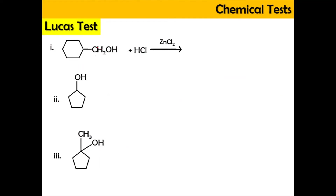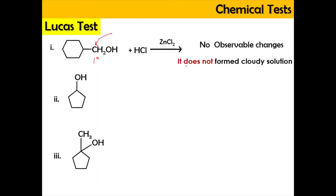Let's look at a few examples. If we have an alcohol where the carbon is attached to one alkyl group, this is a primary alcohol. When the primary alcohol reacts with HCl and zinc chloride — the Lucas test — OH is replaced with Cl, however this reaction will take a very long time. There will be no observable changes and it does not form a cloudy solution.